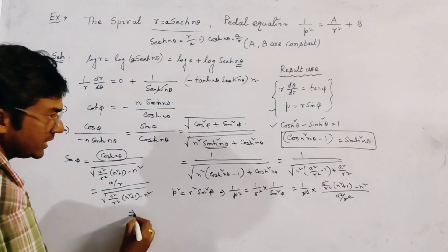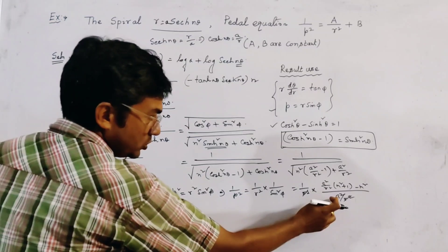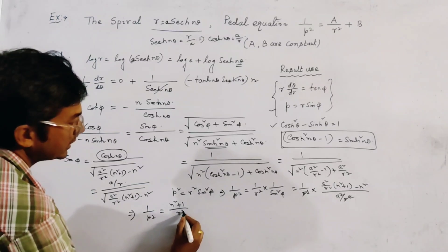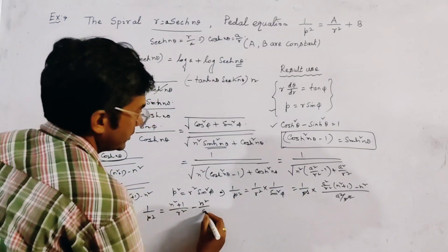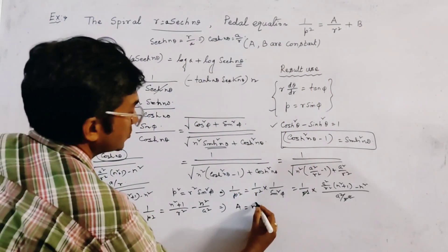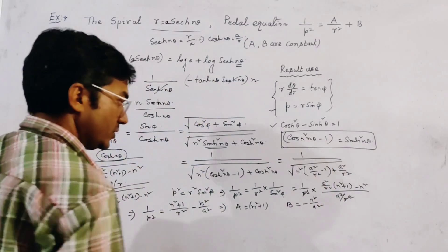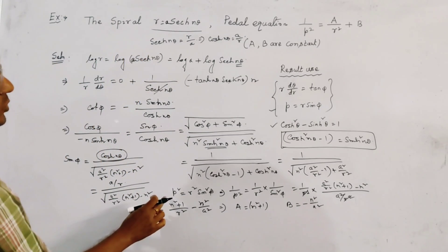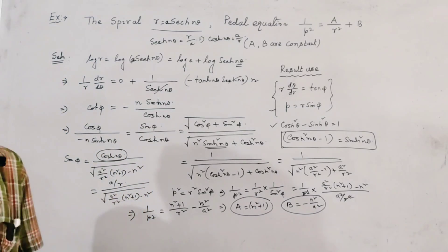Cancelling r² and a² terms, we get 1/p² = (n²+1)/r² − n²/r² ... simplifying further, 1/p² = (n²+1)/r² + (−n²)/r². So the pedal equation is 1/p² = A/r² + B, where the constant A = n²+1 and B = −n²/r². This is the pedal equation of the spiral. This is a very important problem of the pedal equation. Thank you.